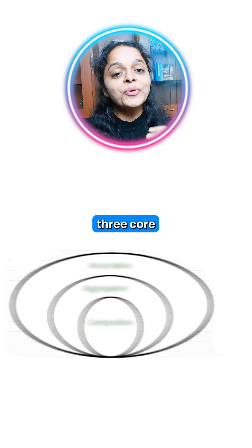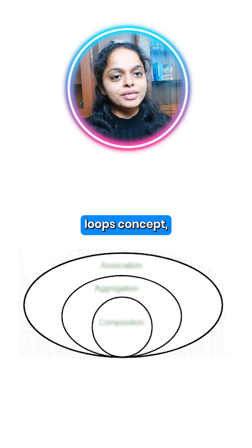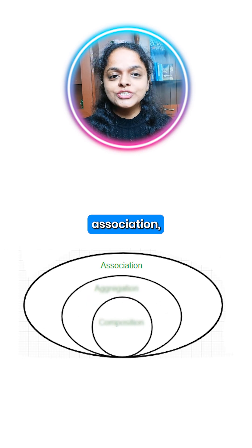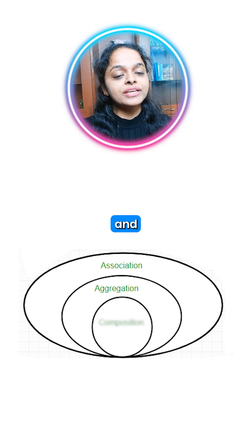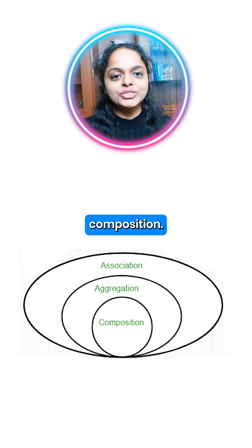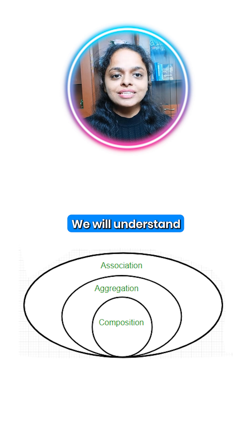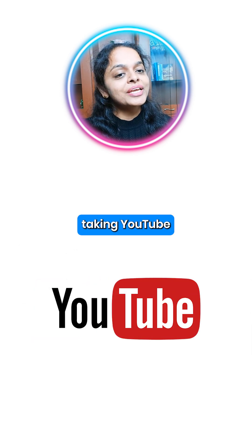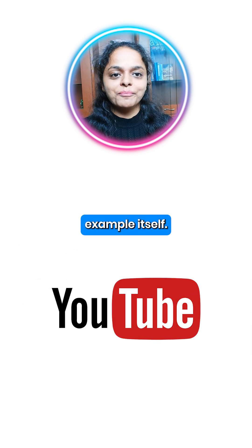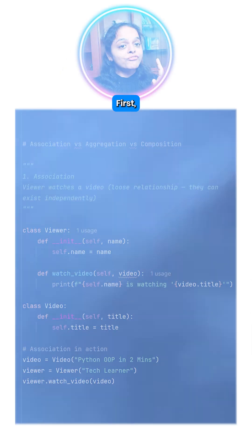Let's understand three core OOP concepts: Association, Aggregation, and Composition. We will understand this by taking a YouTube example itself.